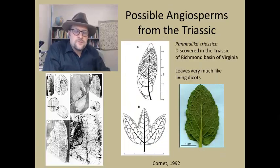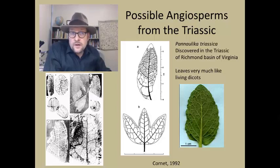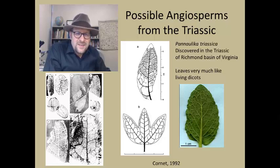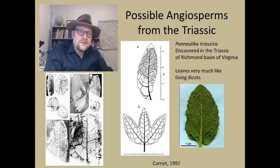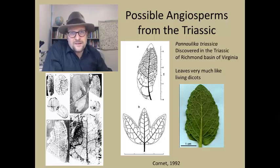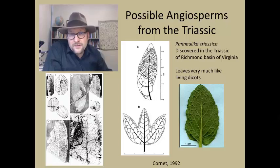The next Triassic fossil is just a leaf from the Triassic of the Richmond Basin in Virginia, the Peñasco Triassic, which closely resembles a living dicot leaf. It has a network of veins and a broad leaf structure, and is really out of place in the Triassic when everything was either a conifer with needles or fern fronds. Sadly this is all we know of this fossilized plant — it would be great if we had more than just a leaf — but it does indicate a possibility that angiosperms might be present in the late Triassic.